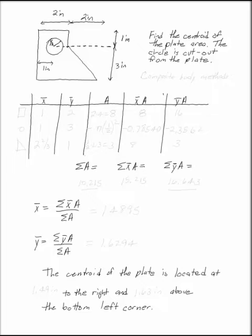Find the centroid of the plate, the center of the area, and you've got this hole cut in your plate. But still, I have a plate that's made up of rectangles, triangles, and circles, so I'm going to use composite body methods to do it.